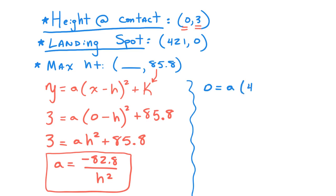What I'm doing now, I'm going to once again write the vertex form. Another piece of information here, the landing spot. I know 421 feet from home plate, it lands or has a height of zero. I put an arrow next to a because I'm going to substitute what we just found, that a is equal to negative 82.8 over h squared. We now go from two variables to simply one. We only have h in here, so we can solve this.